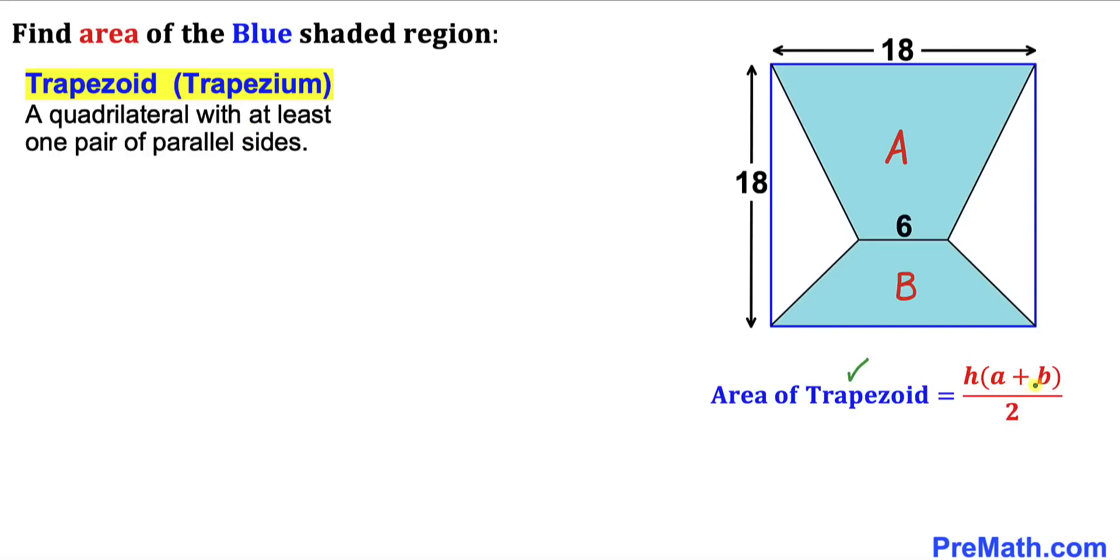H times (A + B) divided by 2, where H is the height of the trapezoid and A and B are the bases of the trapezoid.